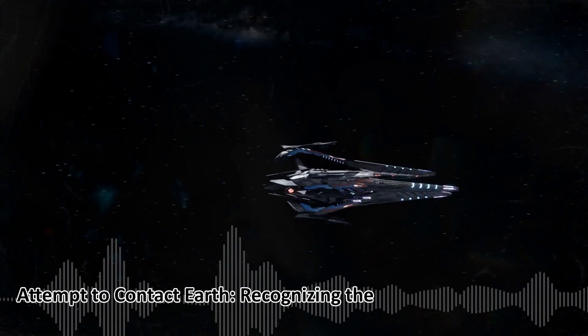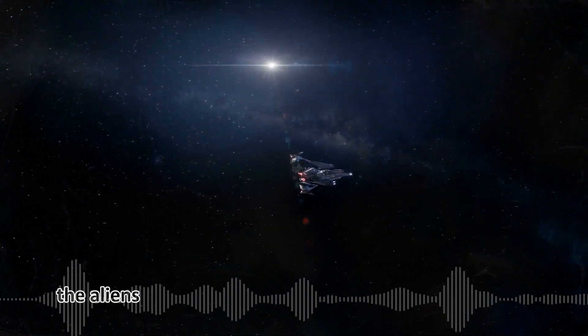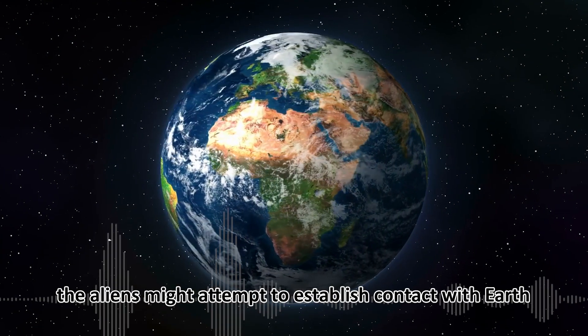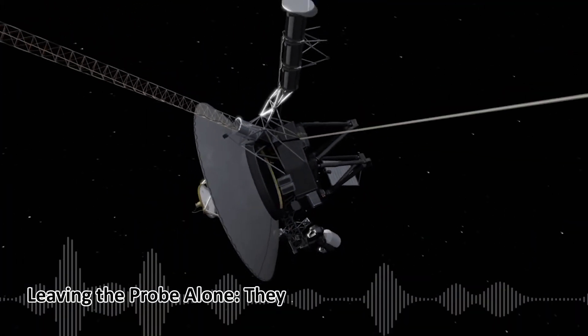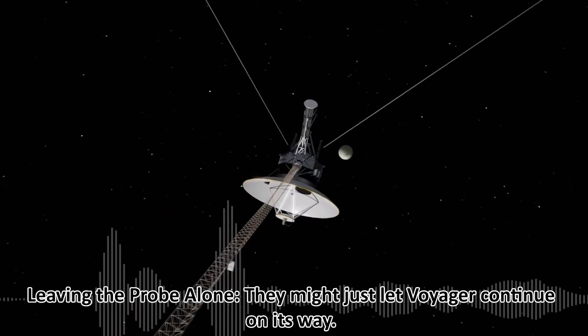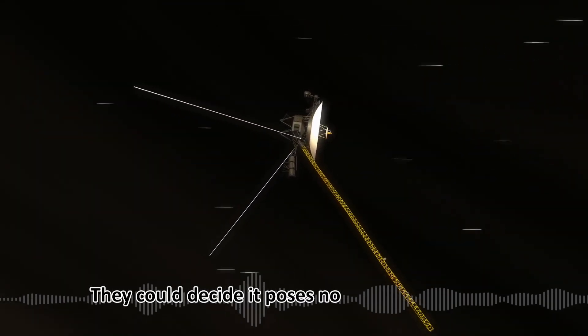Attempt to contact Earth: recognizing the probe's artificial origin, the aliens might attempt to establish contact with Earth. They could use Voyager's technology or their own. Leaving the probe alone, they might just let Voyager continue on its way.